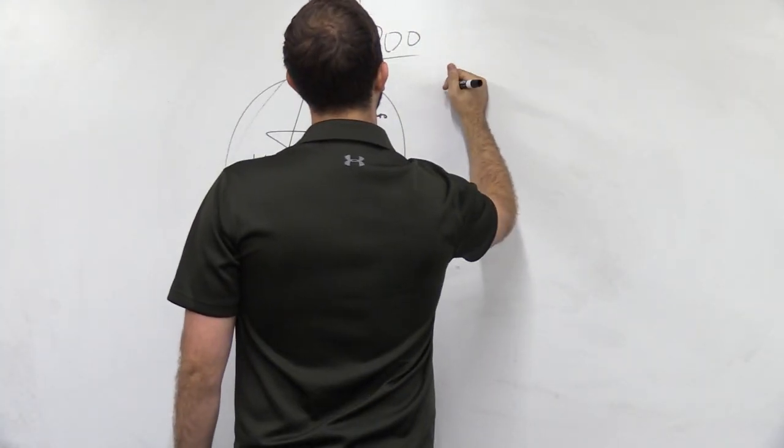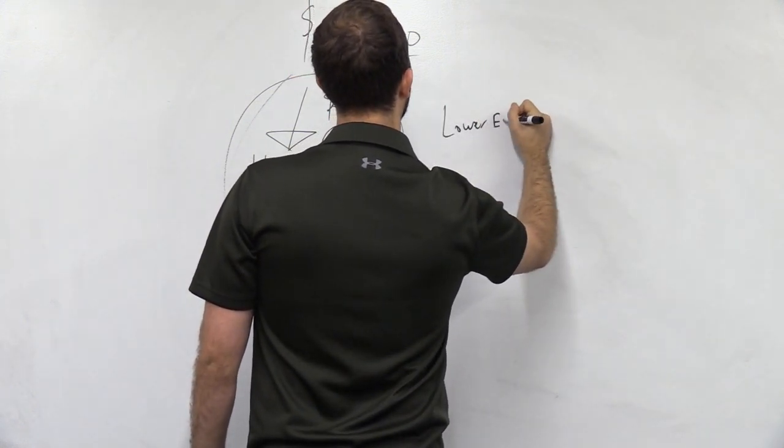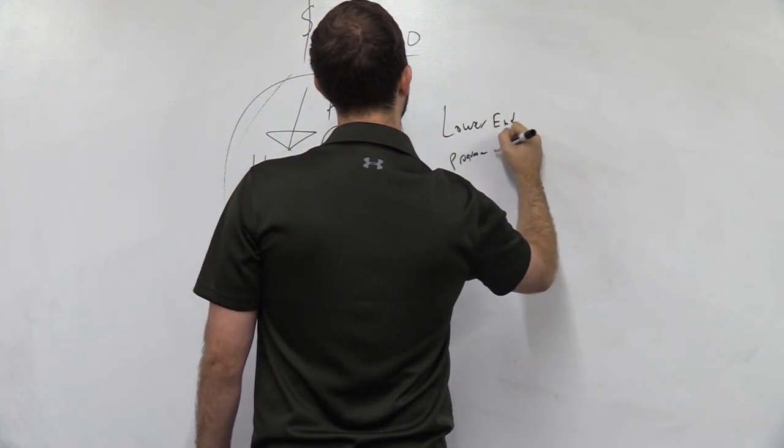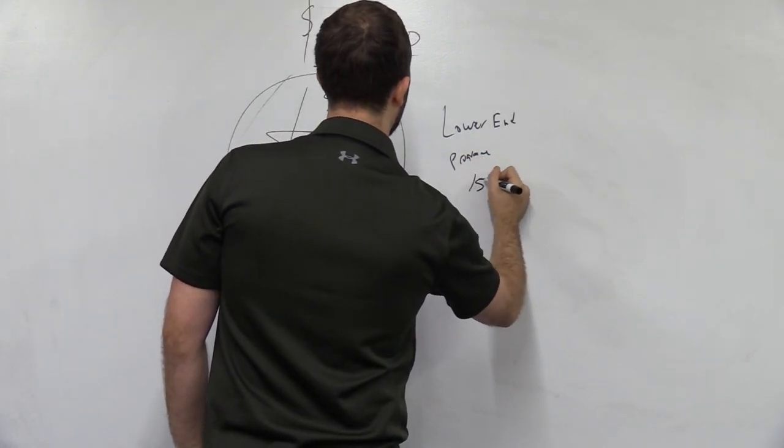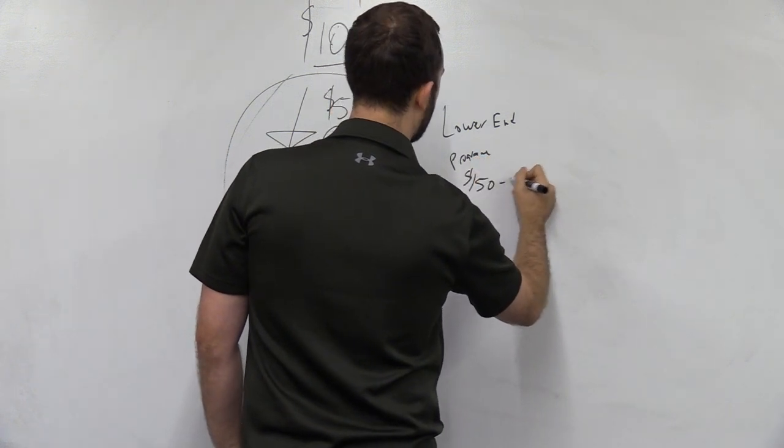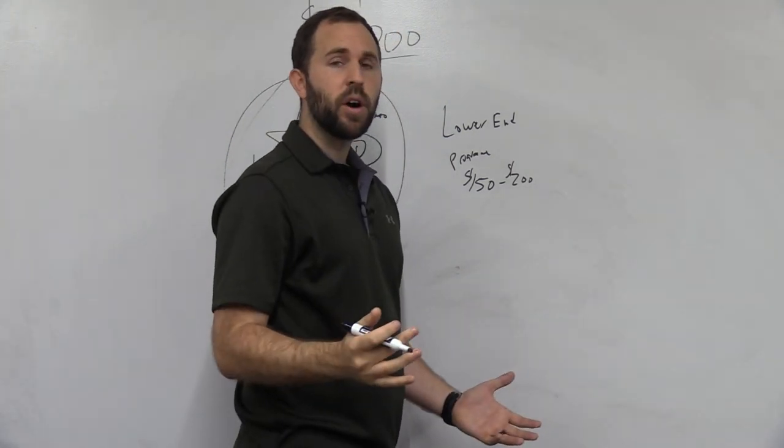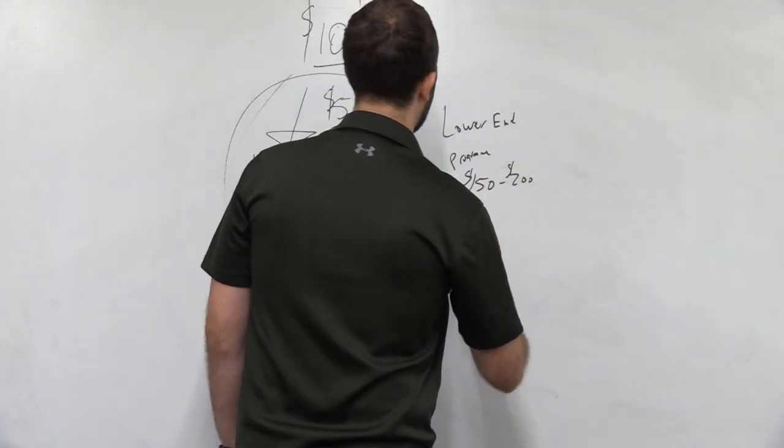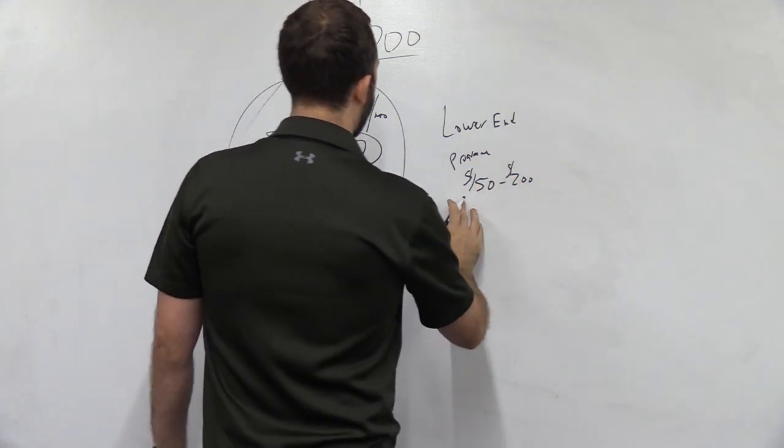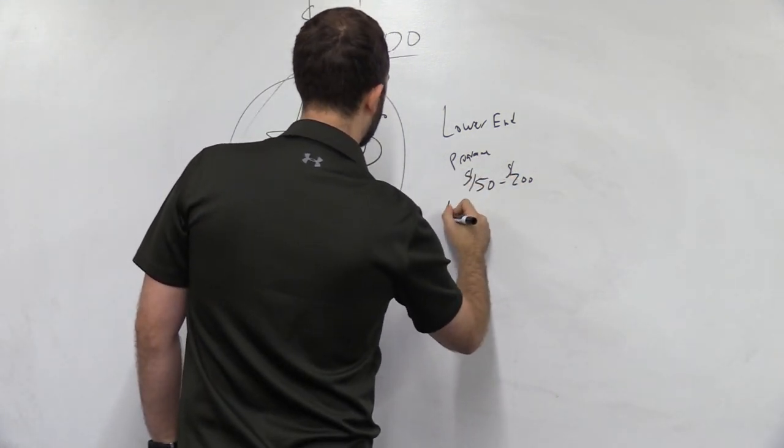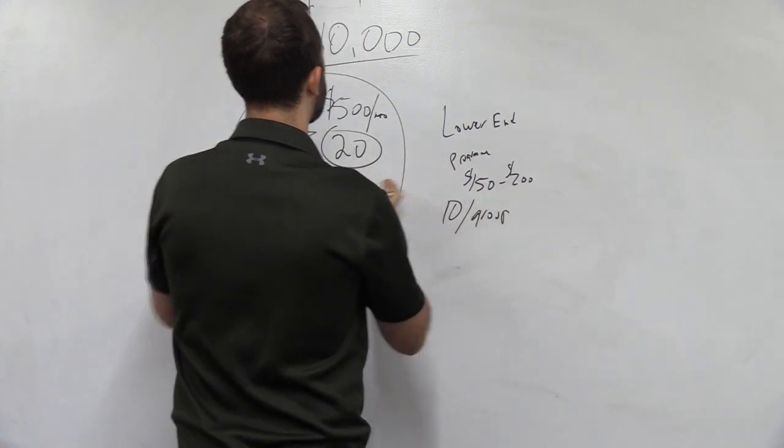Now the next, I'm just going to put this here. I'm just going to put lower end program. And the number to think about here is 150. And I'm going to just range this from 150 to 200. And this could be more on your end. Like that could be $300. But this is a very simple way of doing it. And I'm just going to map this out for you. And let's say we have 10 clients per group. So this is group training. This is individual training.